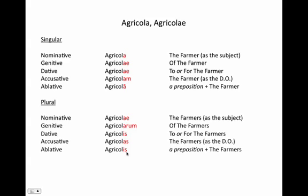As you look at this whole chart and start memorizing these endings, you'll notice that a lot of them repeat. You have the -ae ending in the genitive and dative singular, as well as the nominative plural. And you have the -is ending as both the dative and ablative plural. When you're working with these words and see them in a sentence it'll be very clear which case they fall under, but if you see a form in isolation — like agricolae — it could fall under multiple cases.